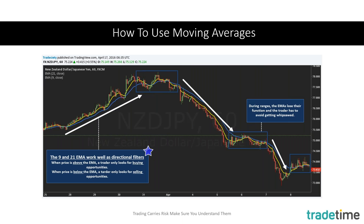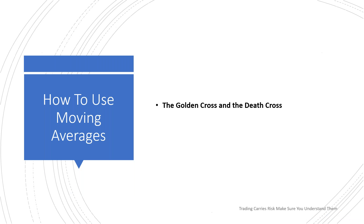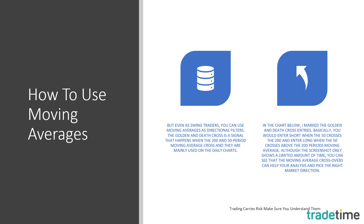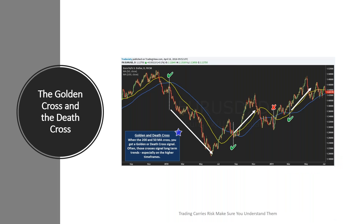On screen you can see a simple but reliable moving average crossover strategy — a 9/21. They work great as directional filters: when price is above the EMA, a trader only looks for buying opportunities; when price is below, only selling opportunities. You also read in the newspaper about the Death Cross and the Golden Cross. You would enter a short position when the 50 crosses below the 200, and enter a long position when the 50 crosses above the 200 — these are called the Golden Cross and the Death Cross.